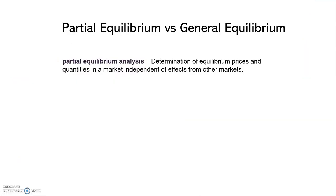So far, our discussions of market behavior have been largely based on partial equilibrium analysis. When determining the equilibrium prices and the quantities in the market, we were presuming that the activity in that market had little or no effect on the other markets. However, a partial equilibrium analysis of this sort is sufficient to understand market behavior, but we must also pay attention to the market interrelationships.